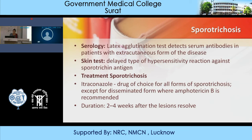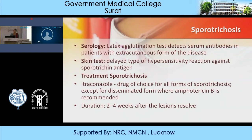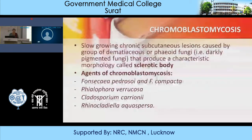Treatment: itraconazole is the drug of choice for all forms of sporotrichosis and indeed for all cases of subcutaneous mycosis, except the disseminated form where amphotericin B is recommended. Duration is two to four weeks after lesions have resolved. That was about sporotrichosis.